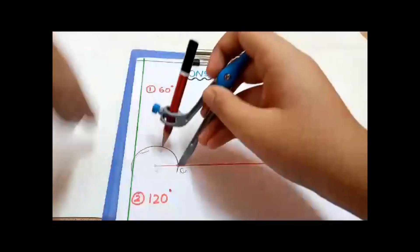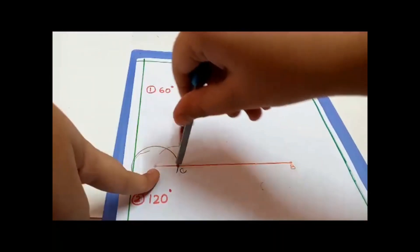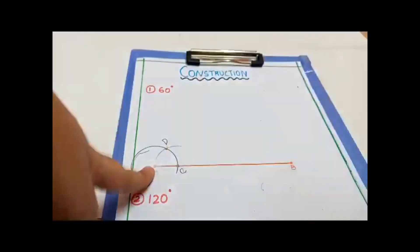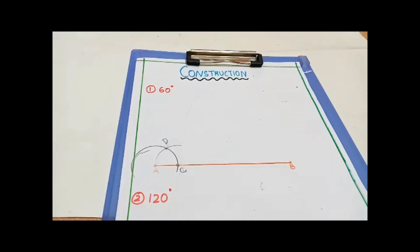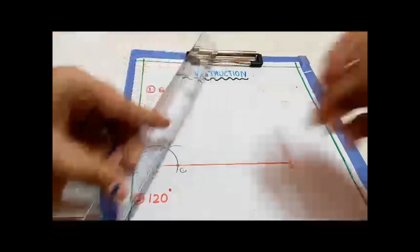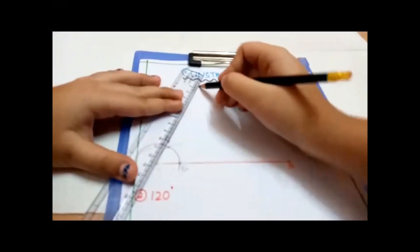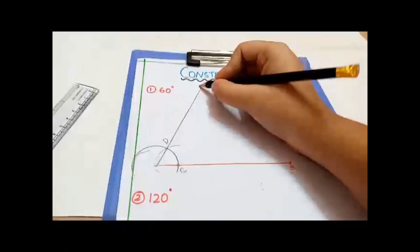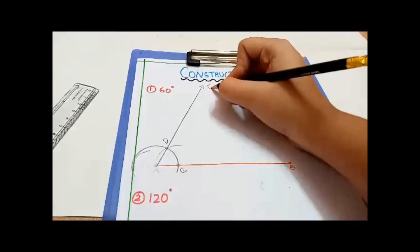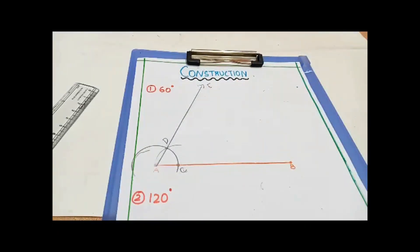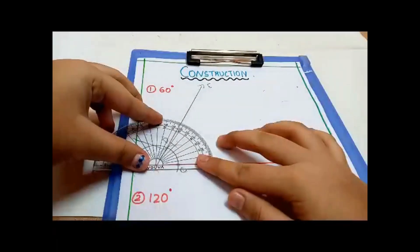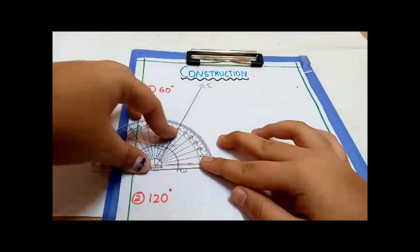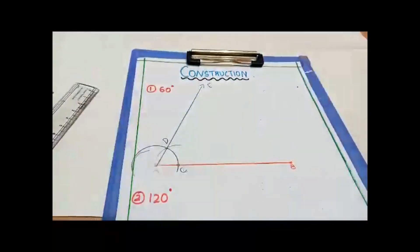With the same radius — you should not change the measure of the compass — put the pointer at C and draw an arc. Name this point as D. Now join A and D. The angle DAB should be 60 degrees. Let's verify: yes, we get 60 degrees.